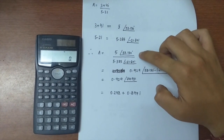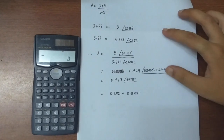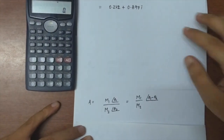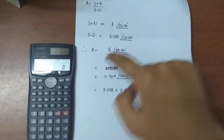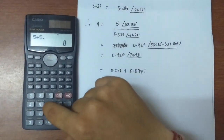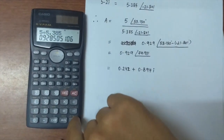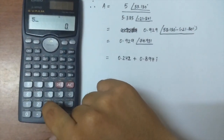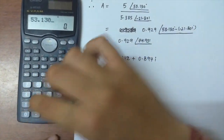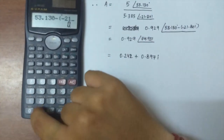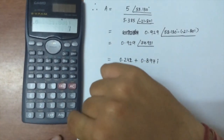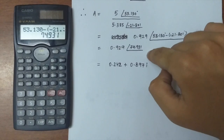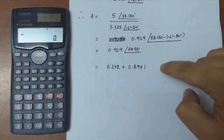Now using the division formula m1∠θ1 / m2∠θ2 = (m1/m2)∠(θ1−θ2): dividing 5 by 5.385 gives 0.929. For θ, we compute 53.130 − (−21.801) = 74.931°. So the polar form of the answer is 0.929∠74.931°. Now we'll convert this back to Cartesian form.